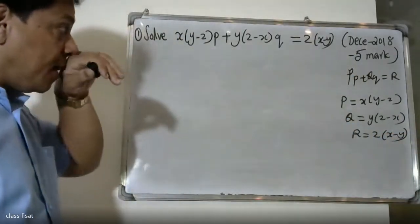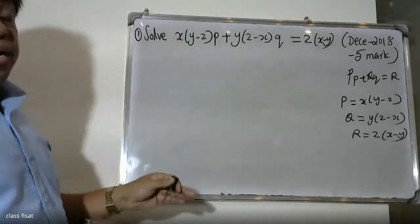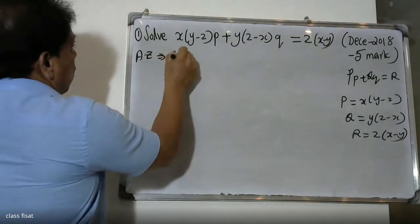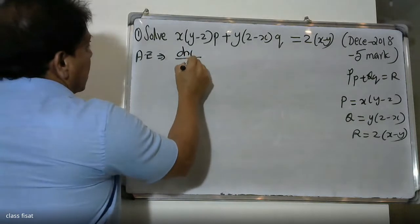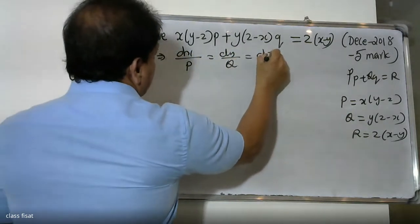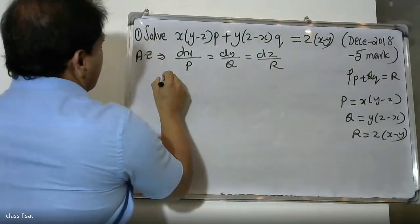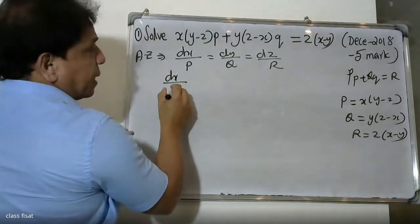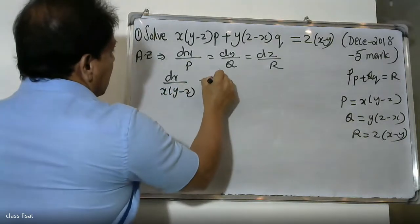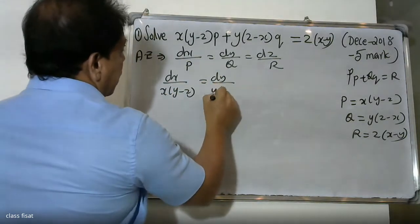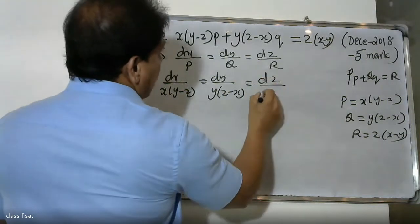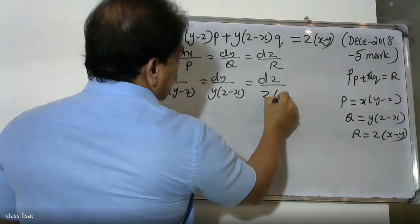To solve this, first we write the auxiliary equation. The auxiliary equation formula is: dx/P = dy/Q = dz/R, which gives us dx/(x(y-z)) = dy/(y(z-x)) = dz/(z(x-y)).